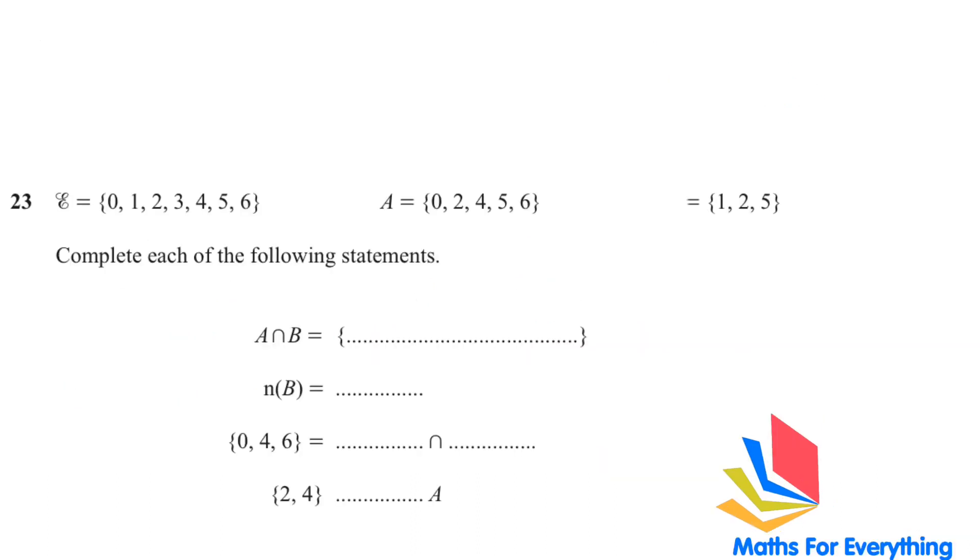Question number 23 is a set question. The universal set is 0, 1, 2, 3, 4, 5, 6. Set A and set B has been given to us. Complete each of the following statements. A intersection B. Intersection means which is in set A and in set B. Which number do we have? We have 2 and 5. So, that's our answer. 2 and 5.